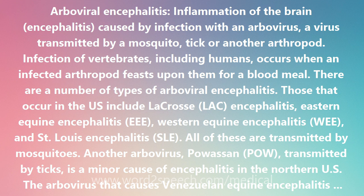Another arbovirus, Powassan (POW), transmitted by ticks, is a minor cause of encephalitis in the northern U.S. The arbovirus that causes Venezuelan Equine Encephalitis (VEE) is usually found in Central and South America but has ventured into the U.S.